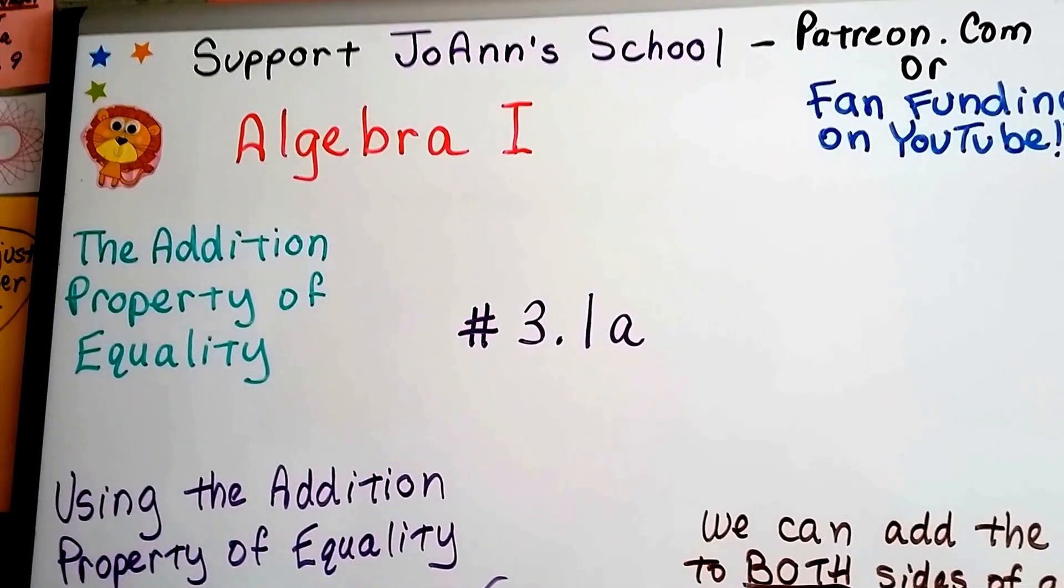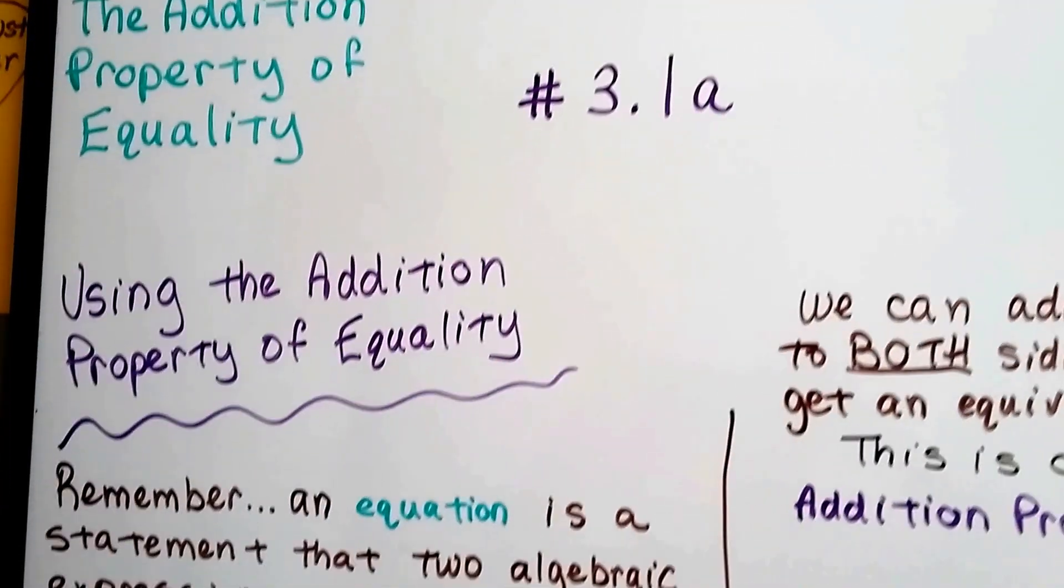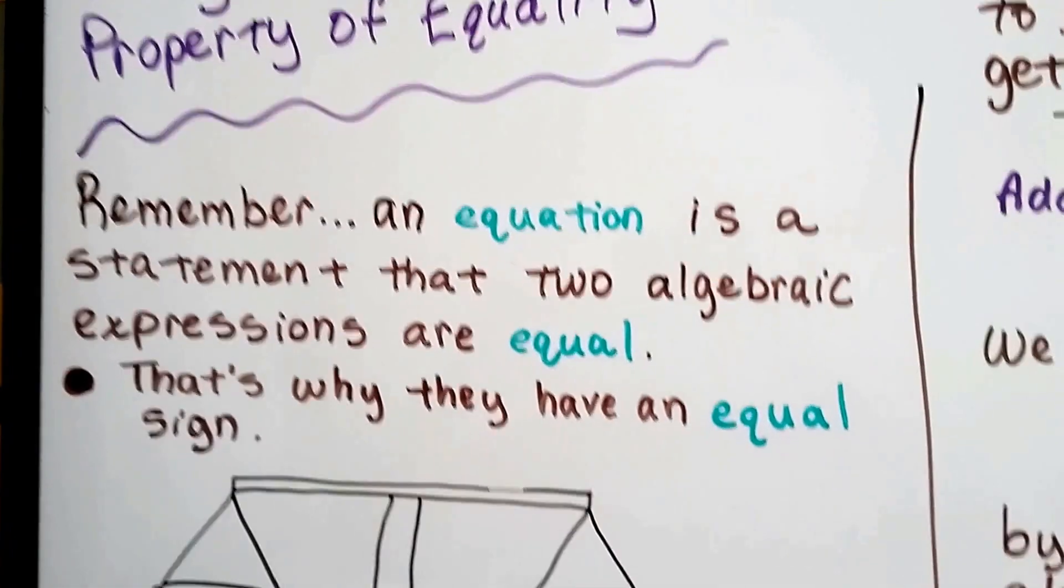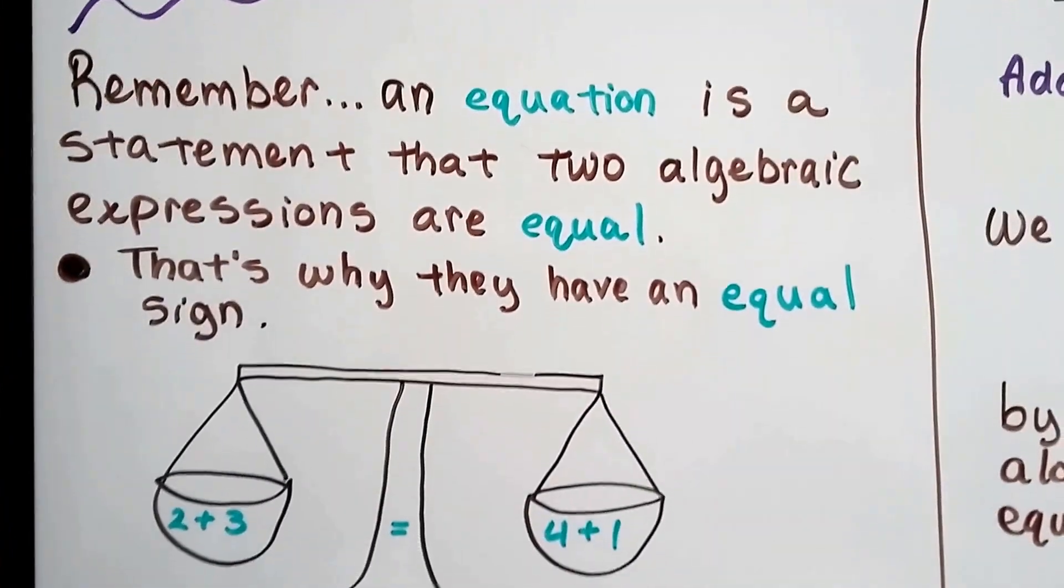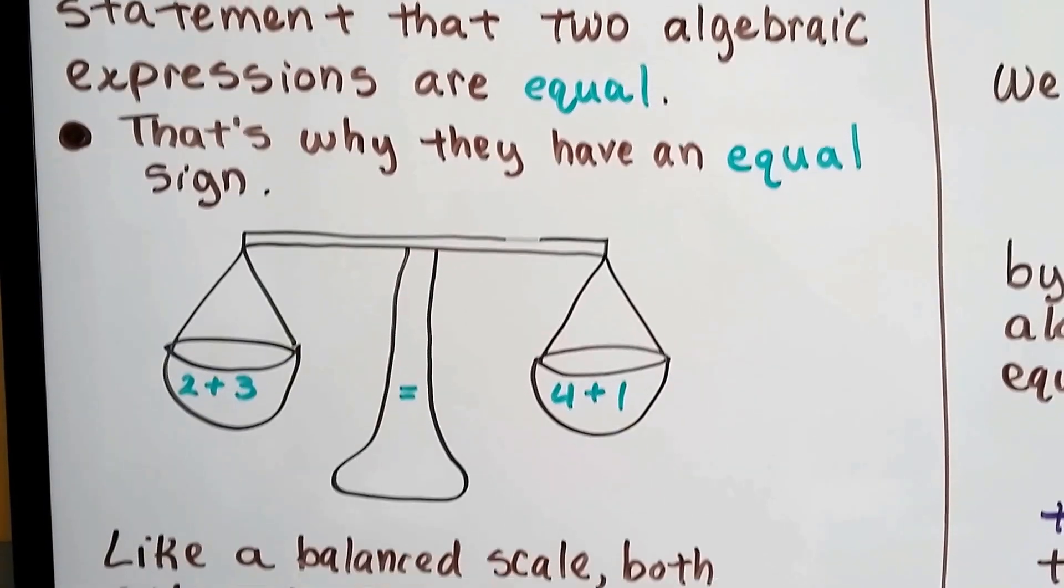Algebra 1 number 3.1a. We're talking about addition property of equality in this unit, and we're going to talk about using the addition property of equality. Remember, an equation is a statement that two algebraic expressions are equal. That's why they have an equal sign.